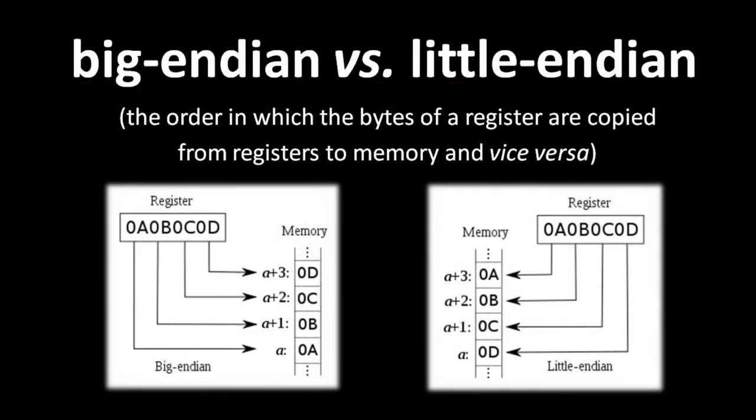You're probably familiar with the Jonathan Swift book Gulliver's Travels. A part not depicted in the cartoon is that in the land of Lilliput, the big Endians are at war with the little Endians over whether to crack eggs from the big end or from the little end — the joke being that the choice is totally arbitrary. CPU designers have a similarly arbitrary choice to make concerning how the bytes in a register get copied to and from memory. Say we have a 32-bit register with the bytes in hex 0A, 0B, 0C, 0D.